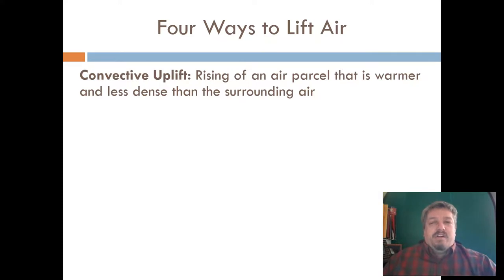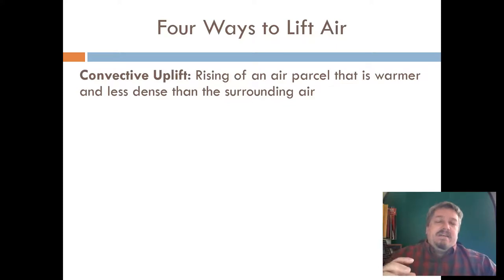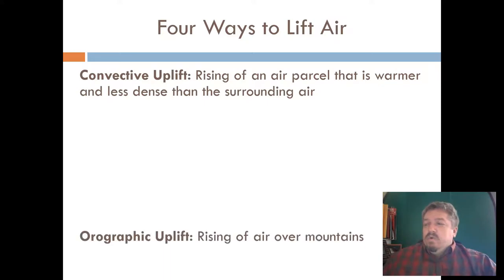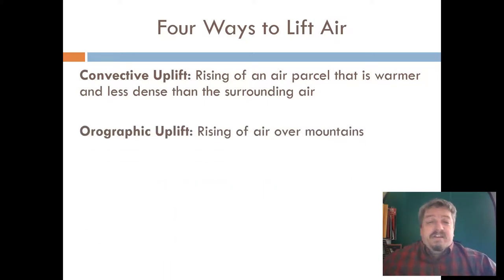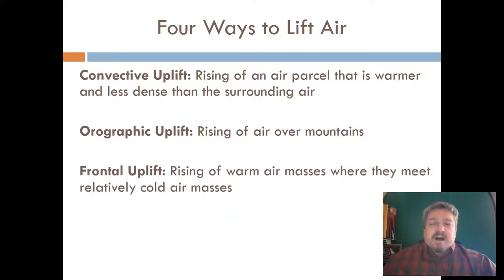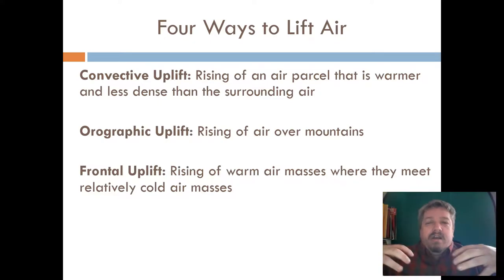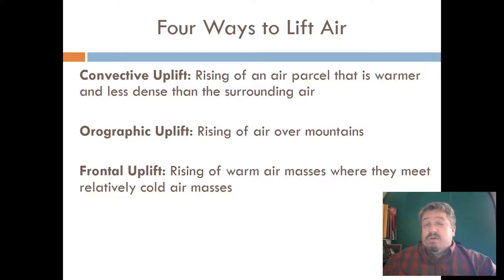We've talked about the first one, which is called convective — so something causes an air parcel to rise, usually just heat. The air gets warm enough that it rises on its own. We just finished talking about orographic uplift — air over mountains or hills. Another one is frontal uplift, when two different masses of air — one warm mass, one cold mass — come across each other. It's usually warm air that goes over the top of cold air. This is the event that usually causes thunderstorms and tornadoes.